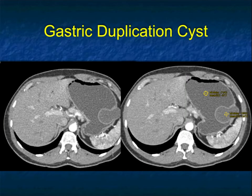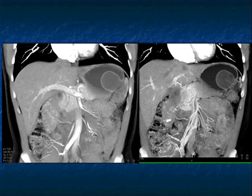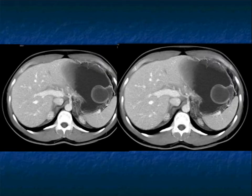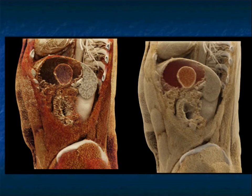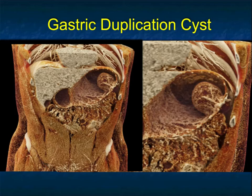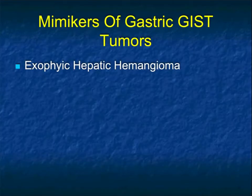Now other mimickers. Here's a lesion which is both intraluminal and extraluminal, though mainly intraluminal, and it's water density. Remember, even necrotic GIST tumors can be necrotic, but this is water density and homogeneous — this is not a GIST tumor. This is a duplication cyst. Duplication cysts are uncommon. It has some intraluminal and extraluminal components giving that dumbbell appearance that might make you think of a GIST tumor. But the water density, homogeneous appearance, and slight wall enhancement make this a beautiful example of a gastric duplication cyst.